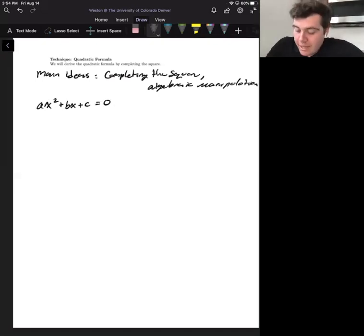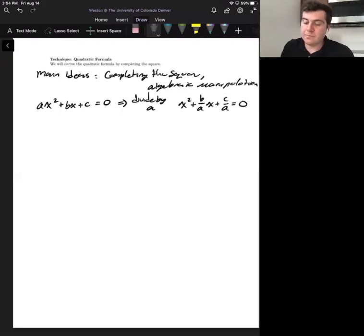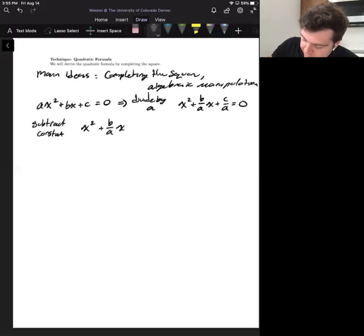Then first we want a coefficient of one in front of the x squared. So we're going to divide everything by a. So that'll give us x squared plus b over a x plus c over a equals zero. Now we're going to subtract the constant term onto the other side.